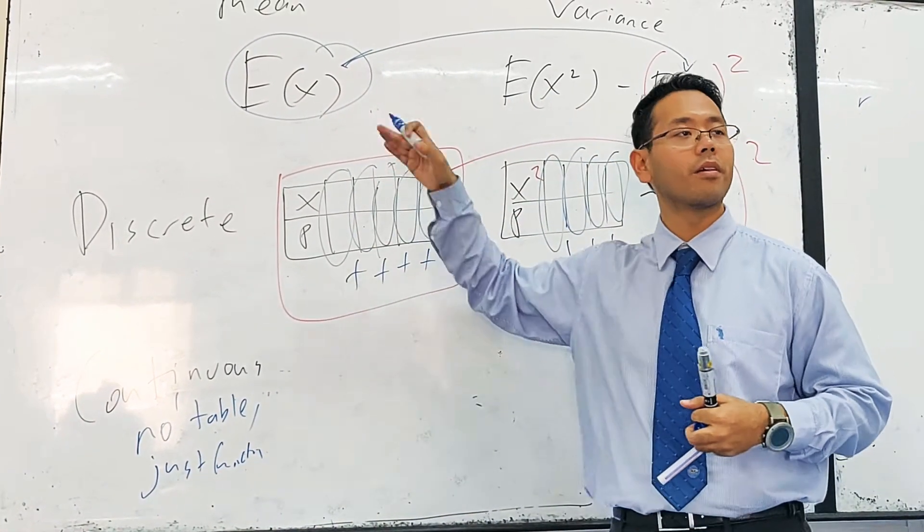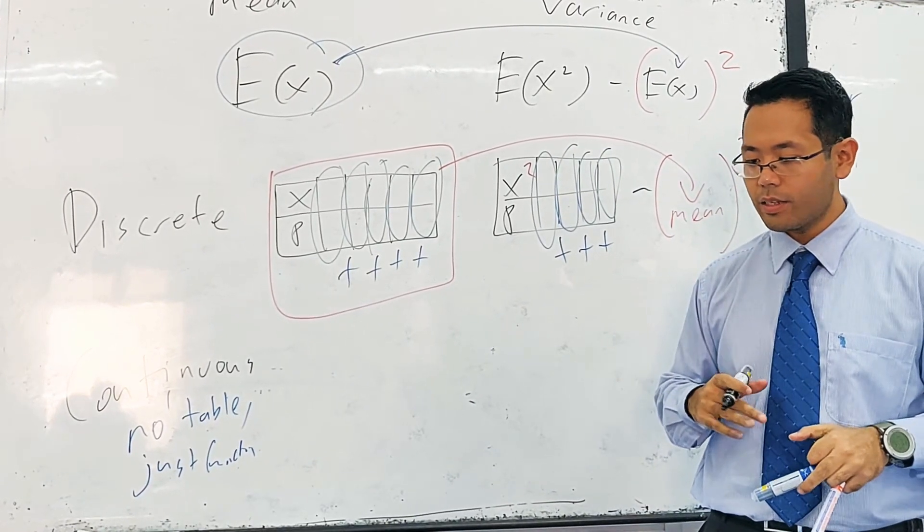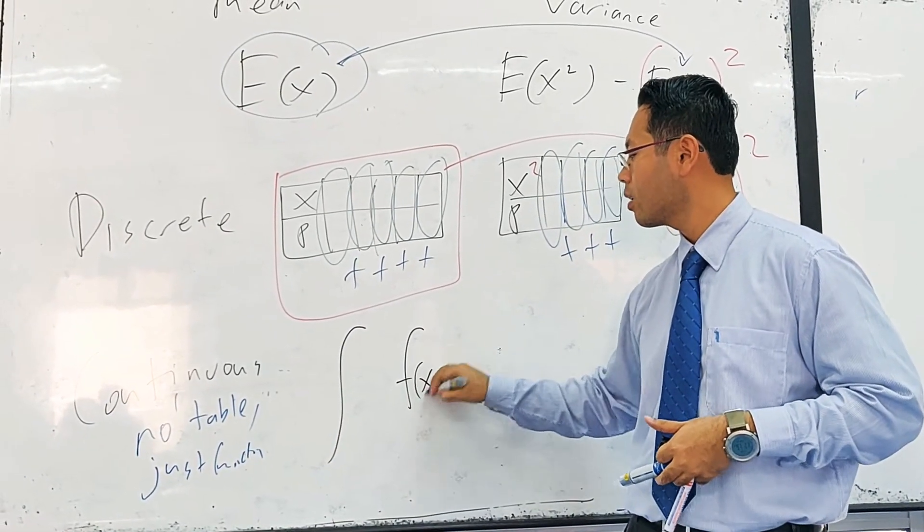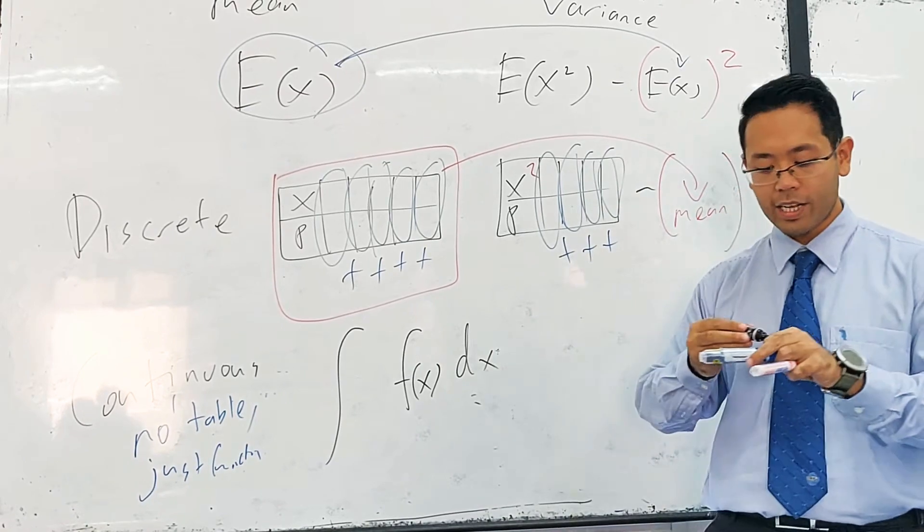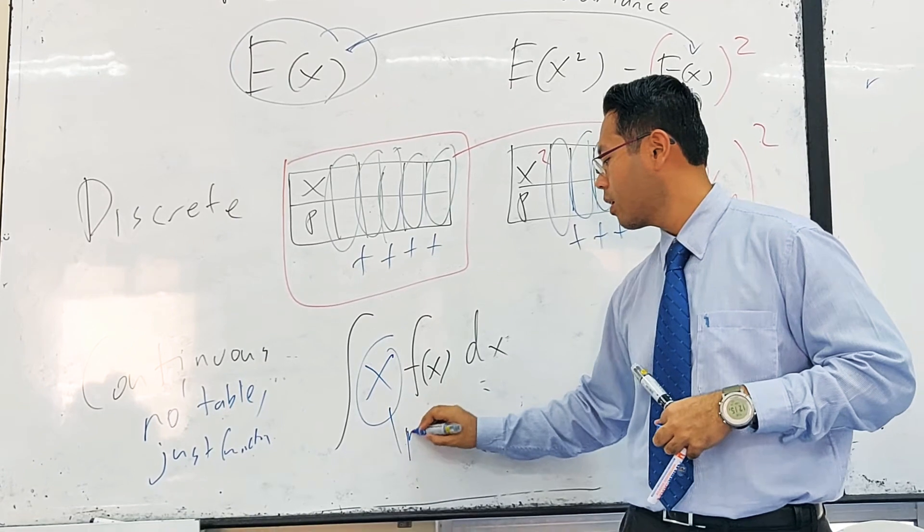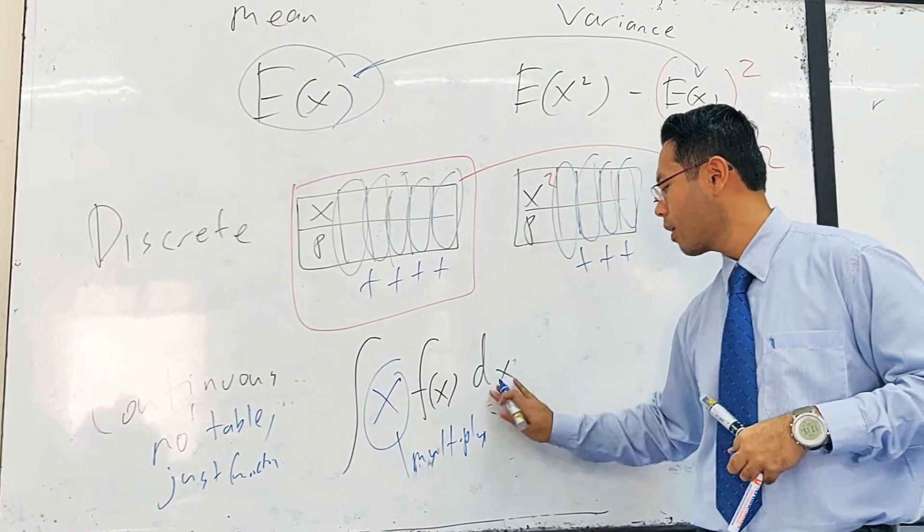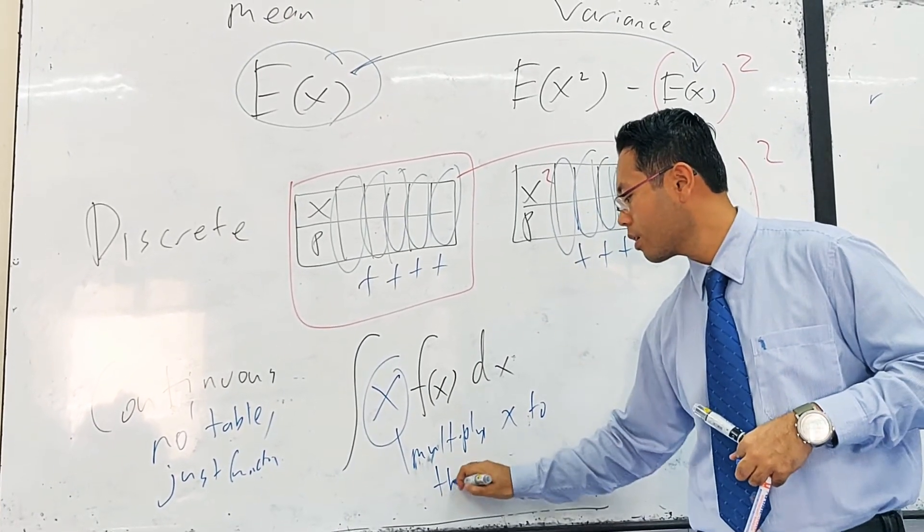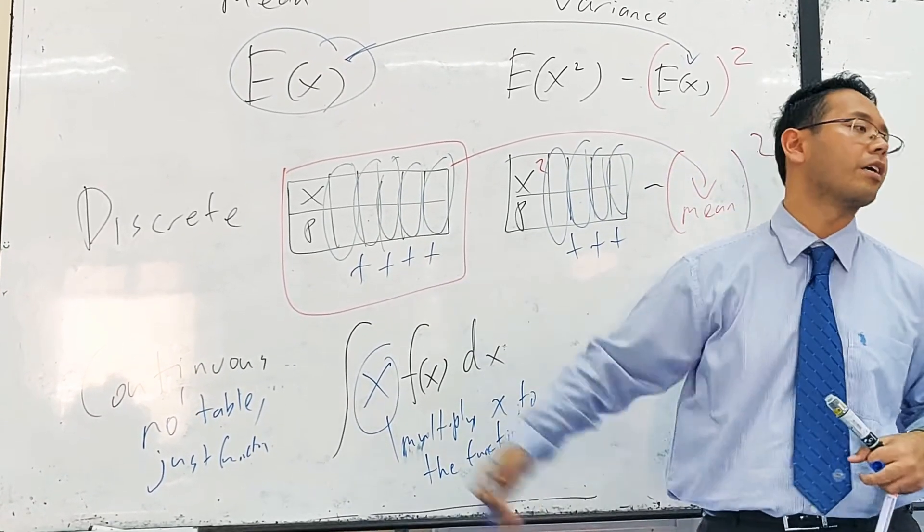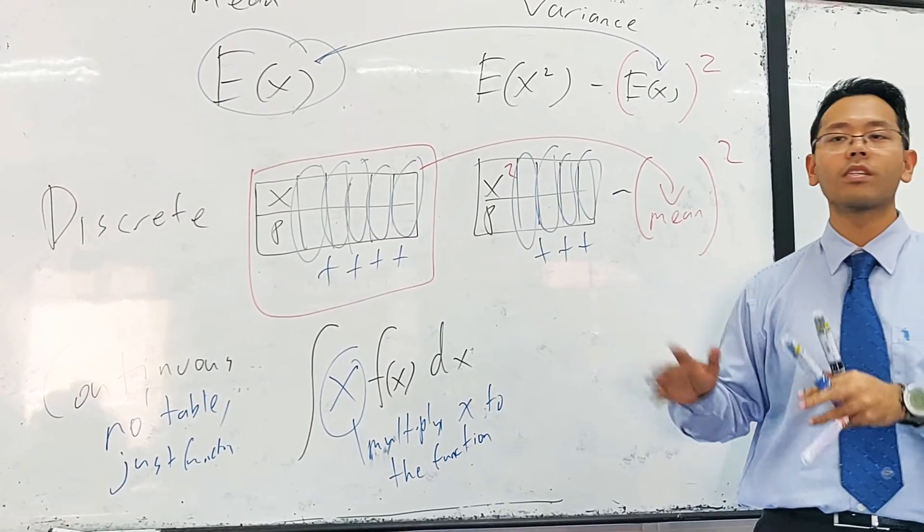So just function. So you won't have this table for you to sum them up. Okay, so the way you do is you integrate the function as usual and then you multiply by x. When you come to discrete you plus, you come to continuous so you integrate.